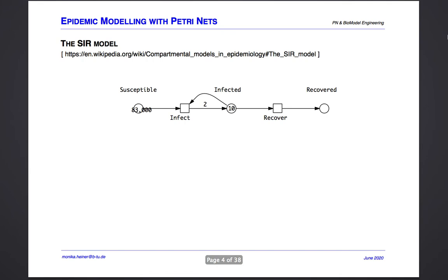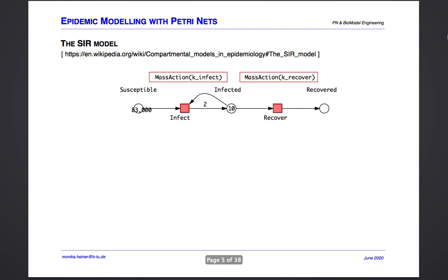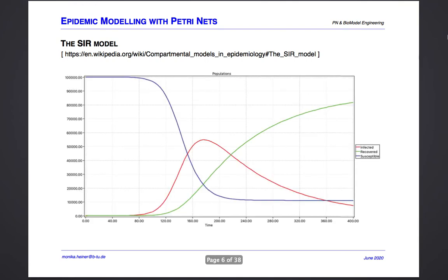Let's consider a timely modeling challenge. We start off with a basic epidemic model comprising three compartments. Next we allocate the transition firing rates, and simulating the model generates traces like this.